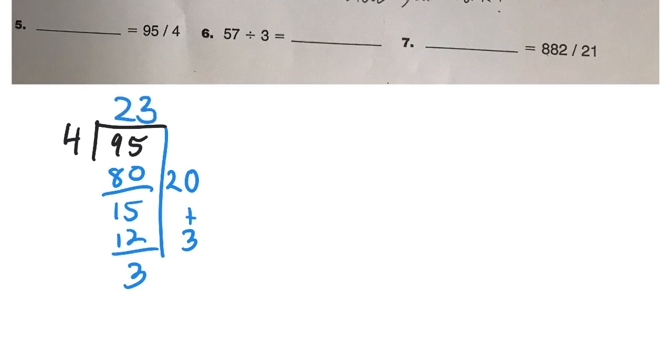And now you could call this a remainder of 3, or you could also do this other trick of turning it into a fraction by putting 3 over top of the number you divided by. So it's actually 23 and 3 fourths, if you'd like to do it like that.